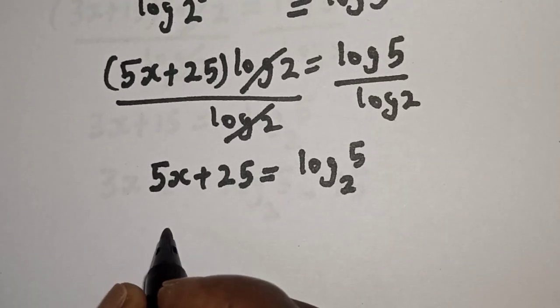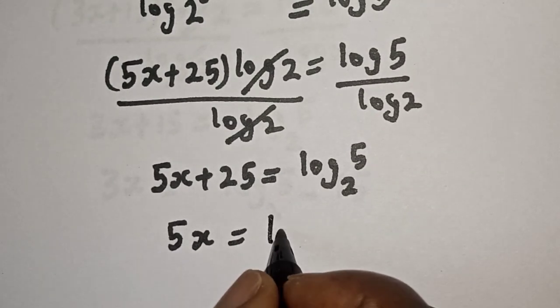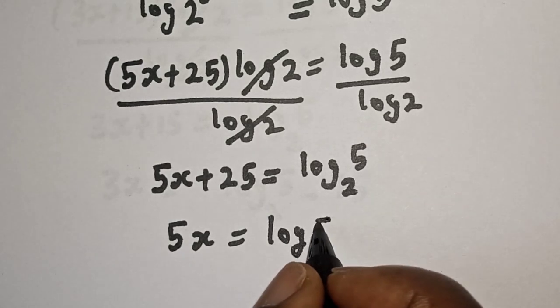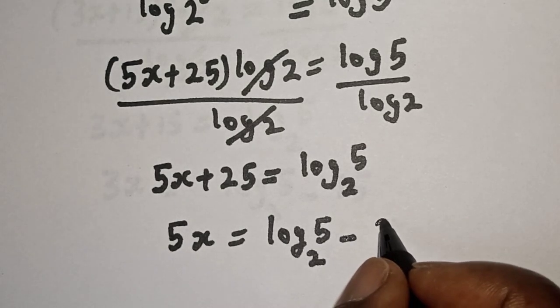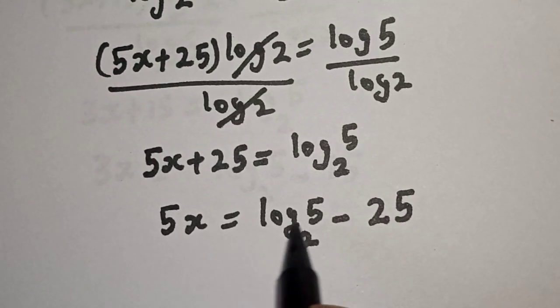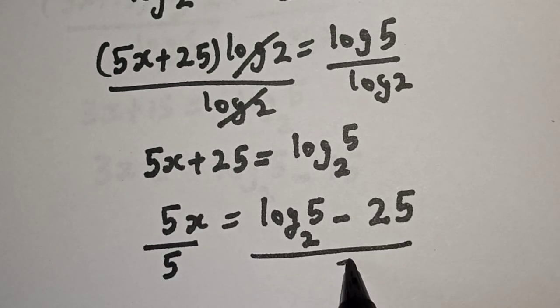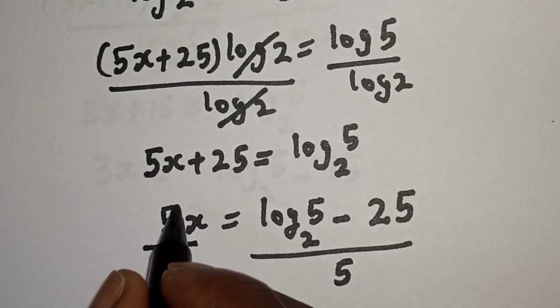So this is 5s plus 25. So 5s equals log base 2 of 5 minus 25. Then, since we are looking for the value of s, let's divide both sides by 5. So this is why we cancel this.